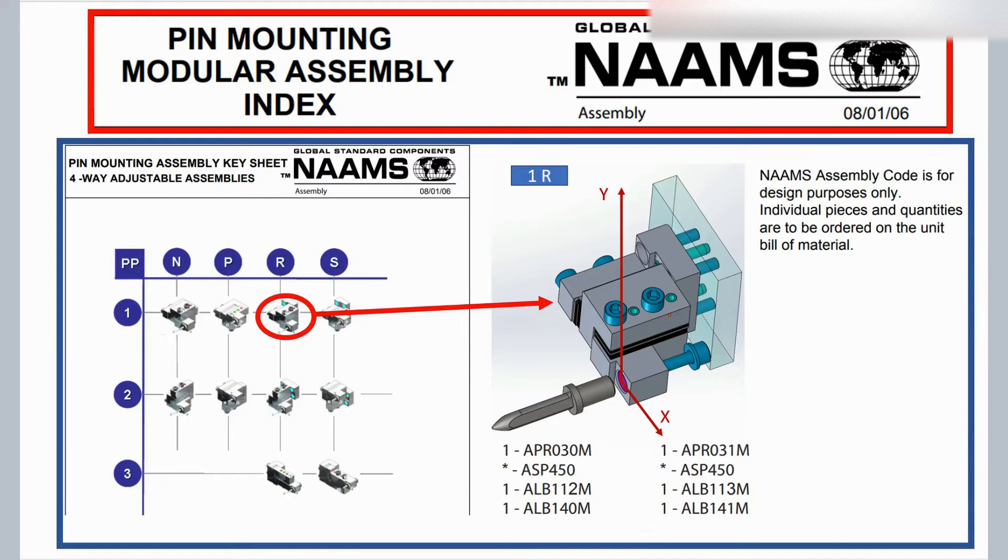As I said in the last video, all pin mounting modular NAAMS assembly codes are for design purposes only. Individual pieces and quantities are to be ordered on the unit bill of material. NAAMS also does not regulate quantities of spacer and shim. The customer defines spacer and shim quantities in their specifications and company standard.